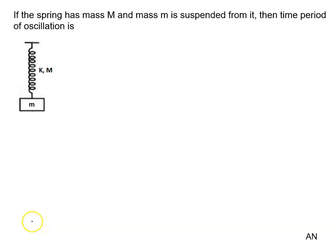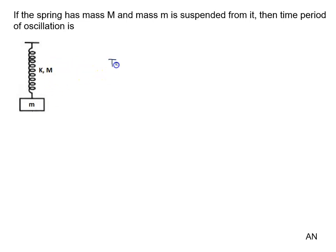If the spring has mass m and a mass small m is suspended from it, then the time period of oscillation — if the spring has no mass, the time period formula is 2π√(m/k).